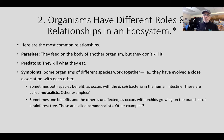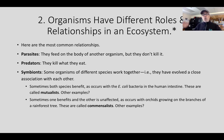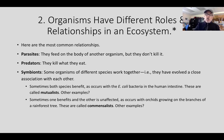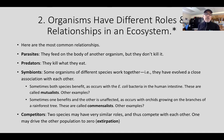When both species benefit, they are called mutualists. Sometimes one species benefits and the other is unaffected — for example, orchids called epiphytes that grow on tree branches benefit by having a place to live and being closer to the light, while the tree is neither hurt nor gains any benefit. These are called commensalists. Finally, there are competitors: two species may have similar roles or needs and compete with each other — one may actually drive the other population to zero, which is called extirpation or local extinction.